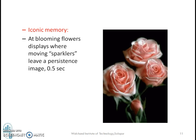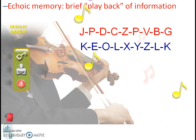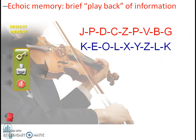Echoic memory is the memory for sound. Humans remember sounds and words in slightly different ways. Memory for sound is referred to as echoic memory, which can be defined as a very brief sensory memory of some auditory stimuli. For example, read the first list of letters on the slide: J, P, D, C, Z, P, V, B, G. Then read the second list: K, E, L, O, L, X, Y, Z, L, K. Did you notice any difference? Which list of letters was easy to recall? List 2, because of acoustic memory.